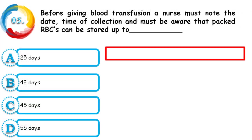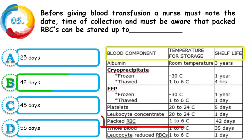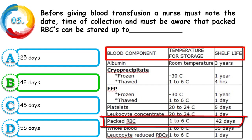Question 5: Before giving blood transfusion, a nurse must note the date and time of collection and must be aware that packed RBCs can be stored up to how many days — 25, 42, 45, or 55 days? The correct answer is 42 days. On the table you can see various blood components, their storage temperatures, and shelf life. For RBCs, store at 1–6°C for up to 42 days.